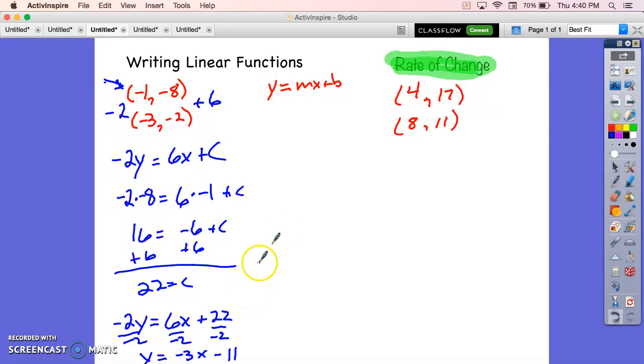All right, let's do this other one. Let's do 4, 17 and 8, 11. My x's are going up 4. These guys are going down 6. So, we go 4y, again notice it, these are the x's, but something's happening to the y's to get the x's to do this. Negative 6x plus c. We'll pick a checkpoint. I like this one.